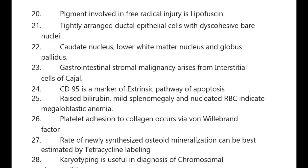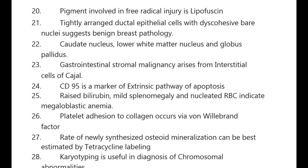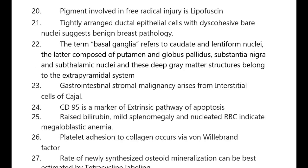Pigment involved in free radical injuries is lipofuscin. Tightly arranged ductal epithelial cells with discohesive bare nuclei suggest benign breast pathology. The term basal ganglia refers to the caudate nuclei and lentiform nuclei; the latter is composed of putamen, globus pallidus, substantia nigra, and subthalamic nuclei — these deep gray matter structures belong to the extrapyramidal system.